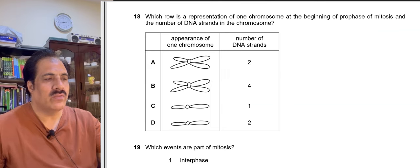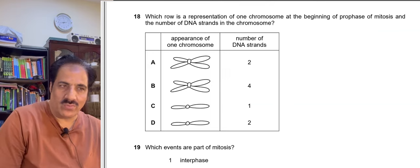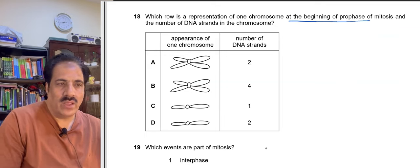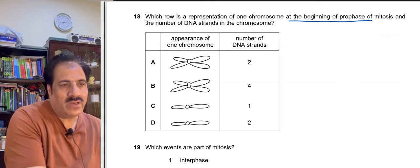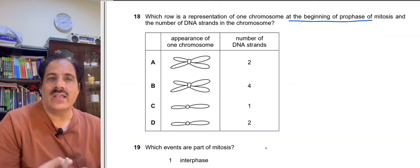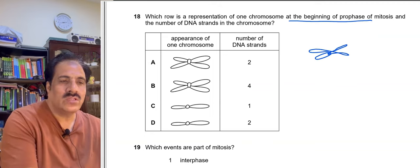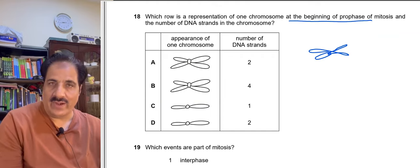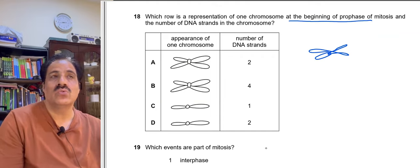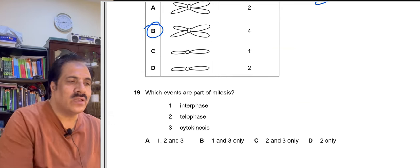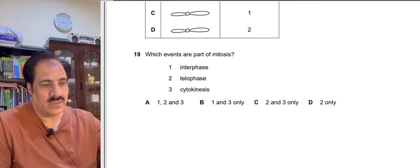Question 18: Which represents one chromosome at the beginning of prophase of mitosis and the number of DNA strands? At the beginning of prophase, the S phase has already occurred, so each chromosome has two chromatids, and each chromatid consists of one DNA molecule with two DNA strands. Therefore: two chromatids and four DNA strands is the correct answer.